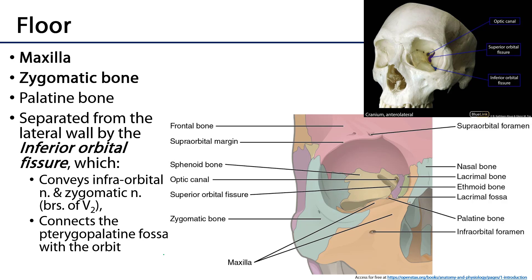The floor of the orbit consists primarily of the maxilla, with a small contribution from the zygomatic bone and a very minor contribution from the palatine bone. The floor of the orbit is separated from the lateral wall by the inferior orbital fissure, which conveys branches of the maxillary nerve — the maxillary division of the trigeminal nerve — including the infraorbital nerve and the zygomatic nerve.